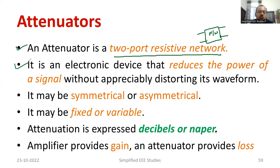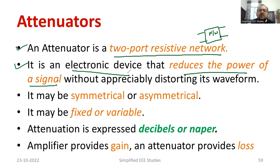The main purpose of an attenuator is to reduce the power of a signal. It is basically an electronic device that reduces the power of a signal without appreciably distorting its waveform. That is the specialty of the attenuator.